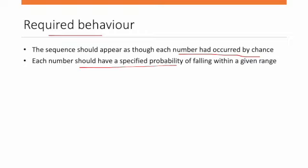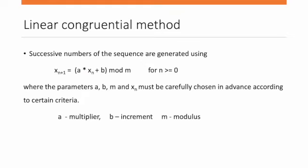And so on. This is the specified probability for each number. This is the required behavior for random numbers. For the linear congruential method, we have one formula like this. We can use it to generate successive random numbers using this formula.